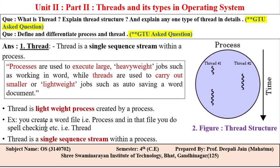For example, you create a word file — that is the process — and inside that file you do spell checking and other tasks — those are threads. With respect to time, here is a process and what is called a thread. The figure shown here is the thread structure, which is the second point. Thread is a single sequence stream within a process, making it easier to perform tasks within a process using the thread concept.